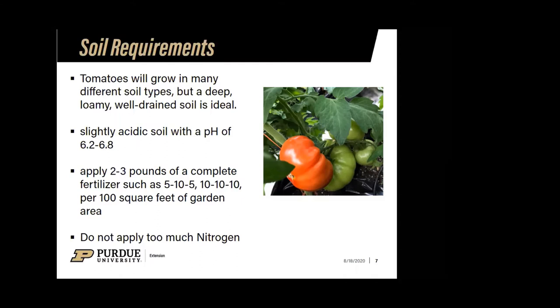We should always remember to take a soil test in our gardens every three years. The general fertilizer recommendation from Purdue University is to apply two to three pounds of a complete fertilizer — such as a 10-10-10 or a 5-10-5 — per one hundred square feet of garden area.